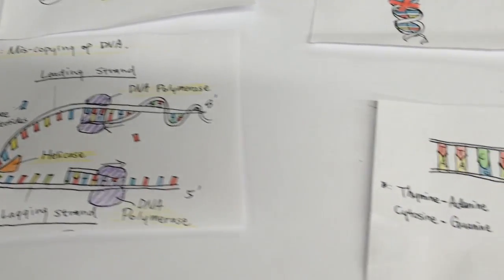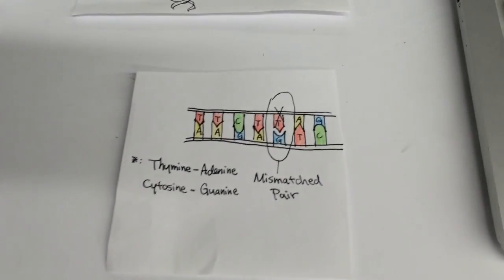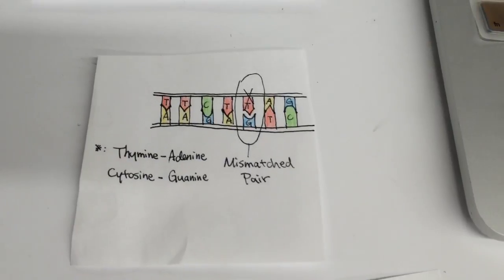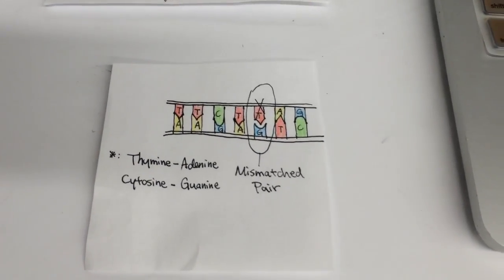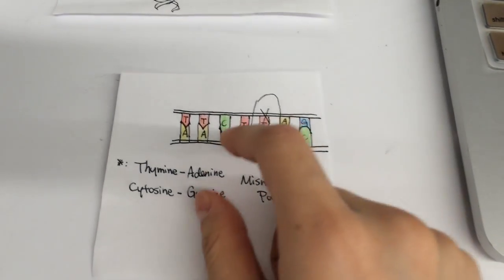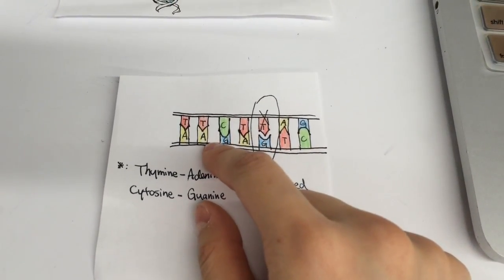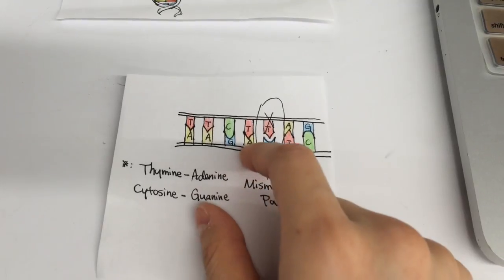At such speed, errors can happen in DNA replication at a chance of about 1 in 10 billion nucleotides. A nucleotide is a combination of the deoxyribose sugar, a phosphate, and a nucleotide base.